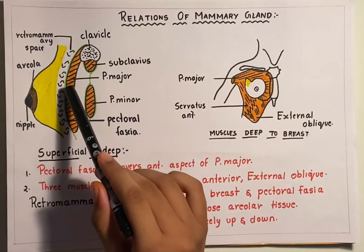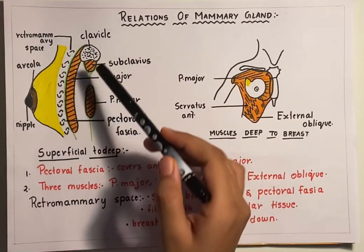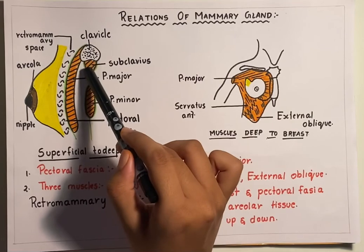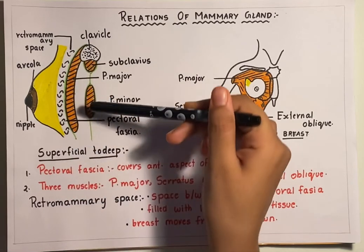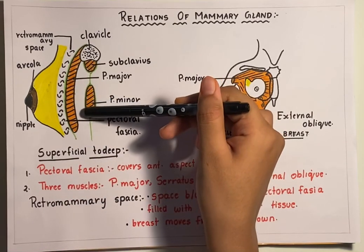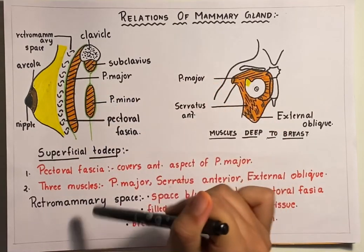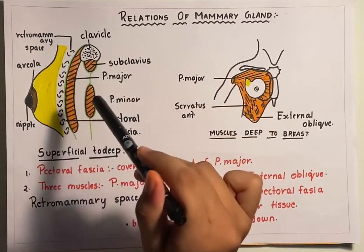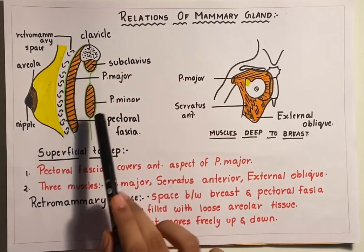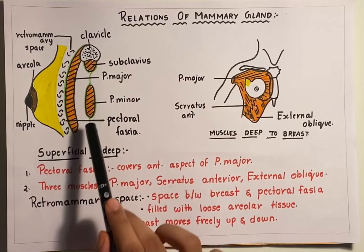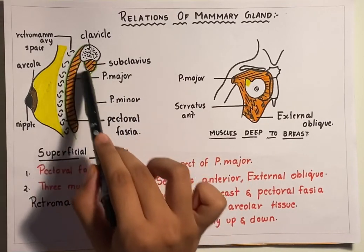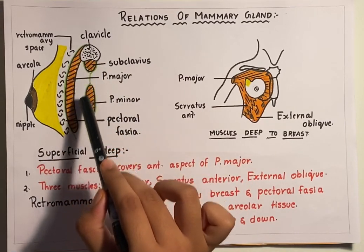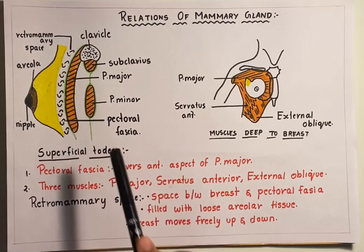Behind the pectoralis major you have the clavicle, the subclavius, the pectoralis minor, and the fascia which encloses the subclavius and pectoralis minor muscle is the clavipectoral fascia, as we have learnt in the previous video.